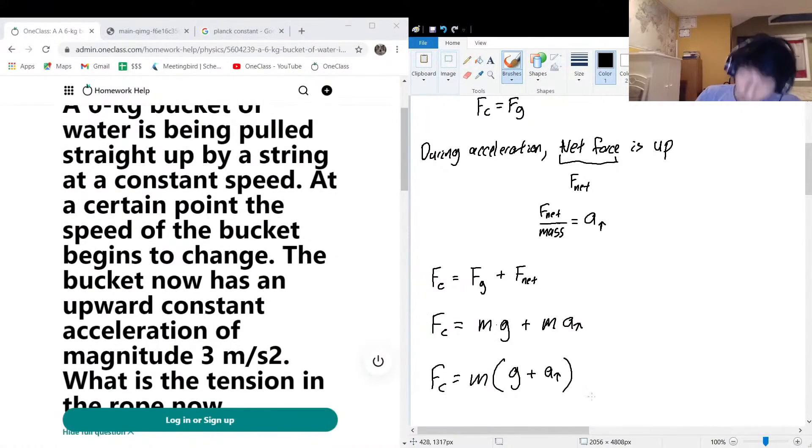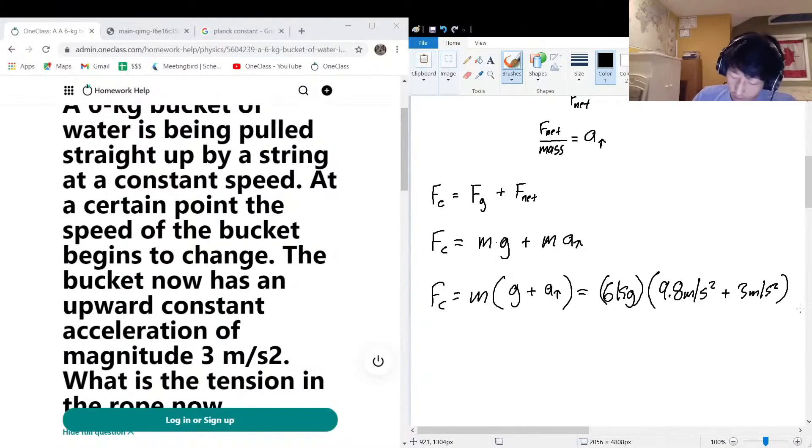We got 9.8 m/s², that's gravity, and the upwards acceleration is 3 m/s². So let's ask our good friend the calculator what the numerical answer is. Six multiplied by—in brackets, don't forget the brackets—9.8 plus 3, in brackets, multiplied by 6. And we get F_c, the amount of tension inside the cable, is 76.8 newtons.